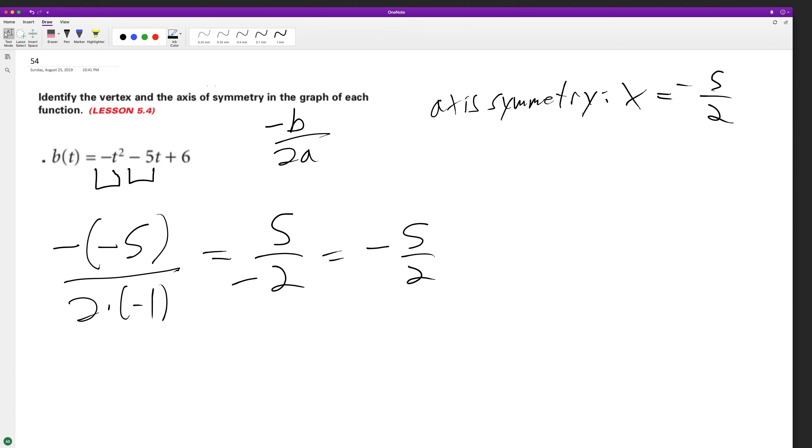x equals negative 5 halves. And then for our vertex, we plug in negative 5 halves into the equation squared minus 5 times negative 5